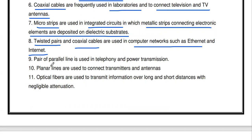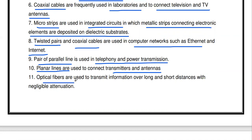A pair of parallel lines is used in telephony and power transmission. Planar lines are used to connect transmitters and antennas. Optical fiber is used to transmit information over long and short distances with negligible attenuation — in optical fiber we transmit the signal in the form of light energy. These are all the various applications of the transmission line.